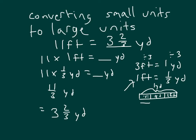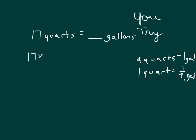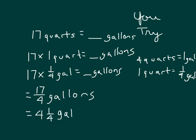Here's a problem for you to try. Remember that four quarts equals one gallon. And if four quarts equals one gallon, think about what one quart equals. One quart equals one-quarter of a gallon. So if we have 17 quarts, that's 17 times one quart equaling a certain amount of gallons. We replace that with 17 times one-quarter of a gallon. That would be seventeen-fourths gallons. Making that improper fraction into a mixed number, four goes into 17 four whole times with a remainder of one, so that's four and one-quarter gallons. 17 quarts equals four and one-quarter gallons.